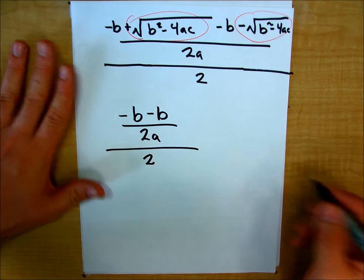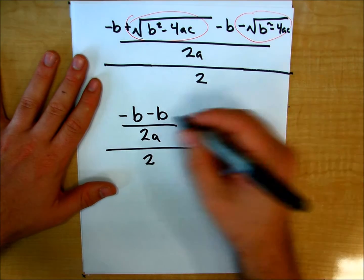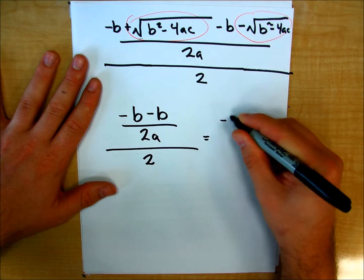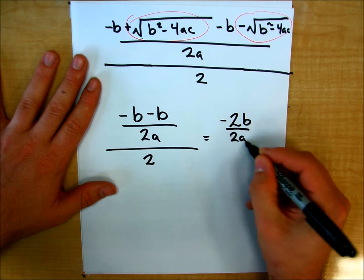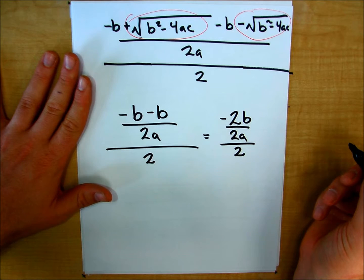And that is equivalent to negative 2b over 2a all divided by 2.